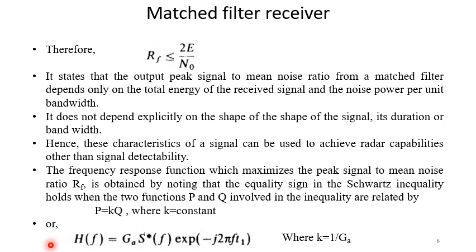by P equal to K into Q where K is a constant. So actually it should be P equal to K into Q*. Star is the complex conjugate but for real function we can write it in this way.